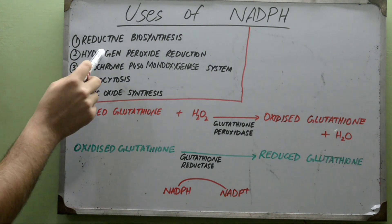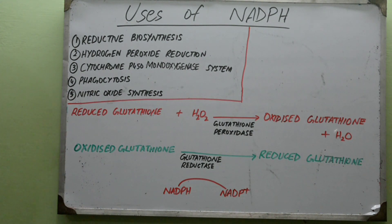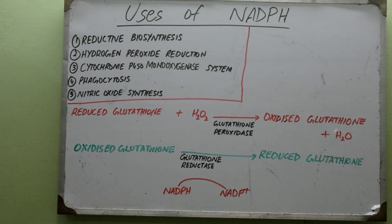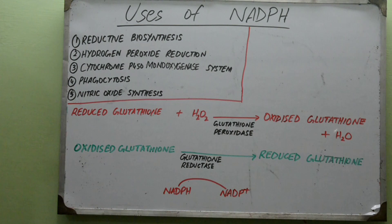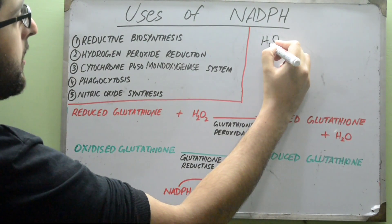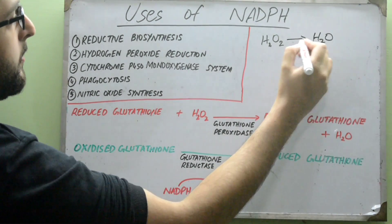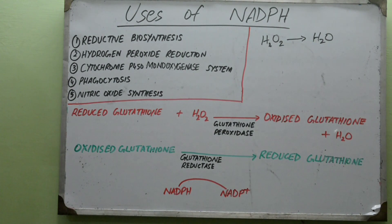The second use of NADPH is hydrogen peroxide reduction. Hydrogen peroxide, H2O2, is a free radical. It belongs to the family of reactive oxygen species, which are produced normally in aerobic respiration and in other processes that require oxygen, as well as due to environmental toxins. This hydrogen peroxide has to be reduced back to water, H2O — we have to remove one oxygen atom from H2O2 to reduce it to water, which is harmless.